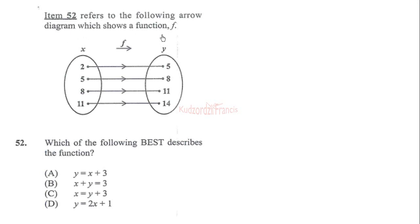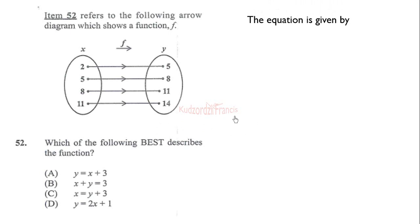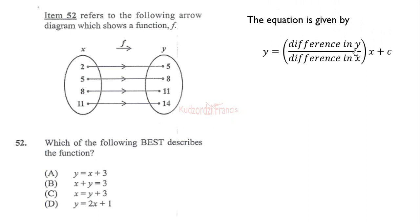From the function you can see 2 maps to 5, 5 maps to 8, 8 maps to 11, and 11 maps to 14. Which of the following best describes the function? We know the equation of the function can be given as y equals the constant difference in y over the constant difference in x, times x, plus c.